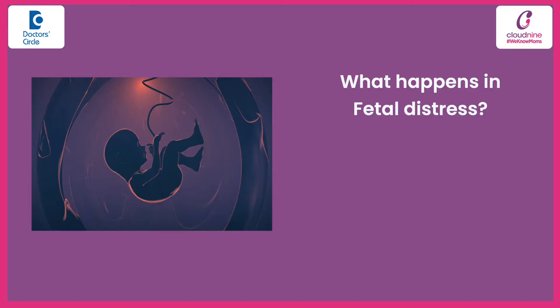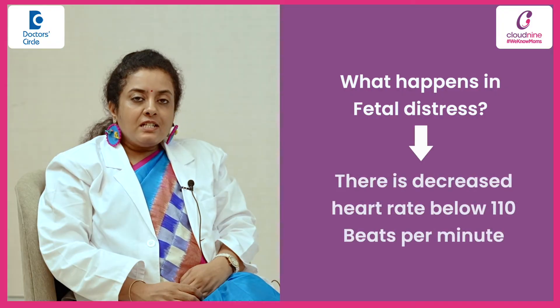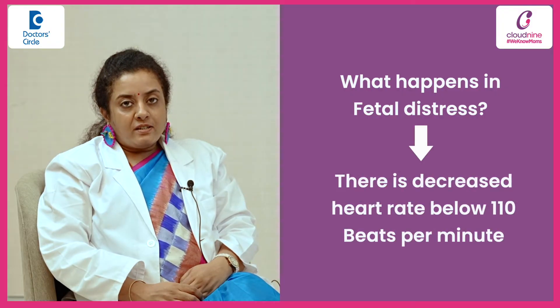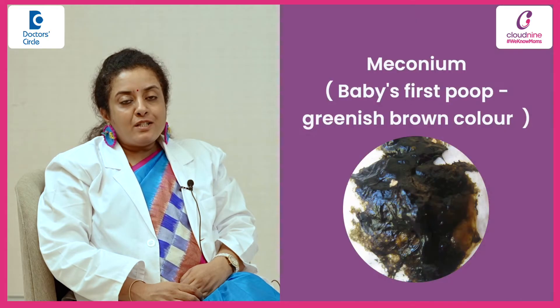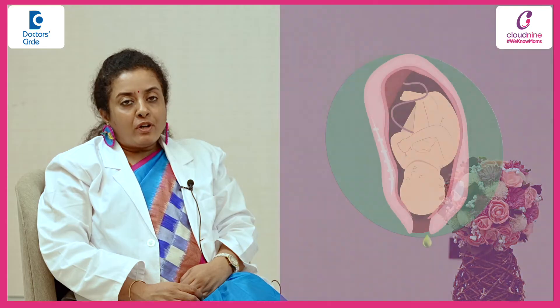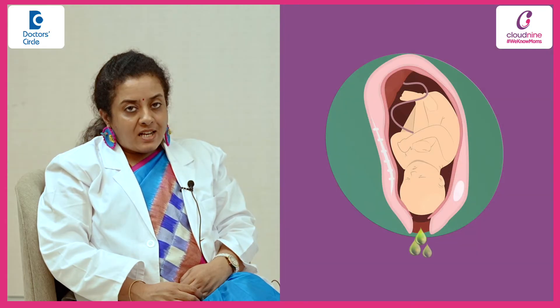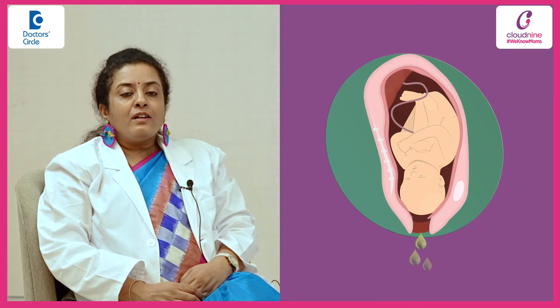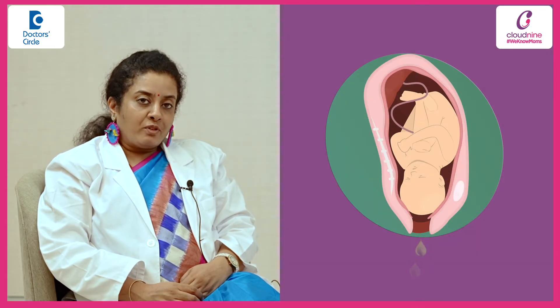What happens in fetal distress? There is decreased heart rate below 110, and also the baby's first poop — a greenish-brown meconium — is secreted from the baby, which is seen if the water bag breaks naturally or if the doctor has broken it.